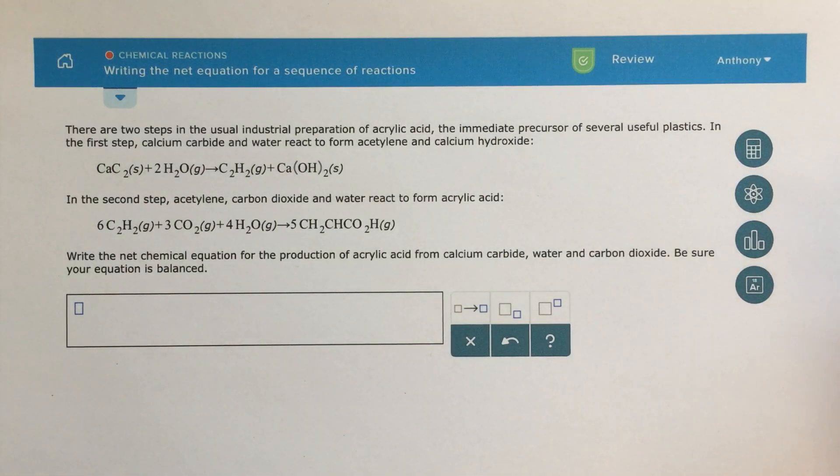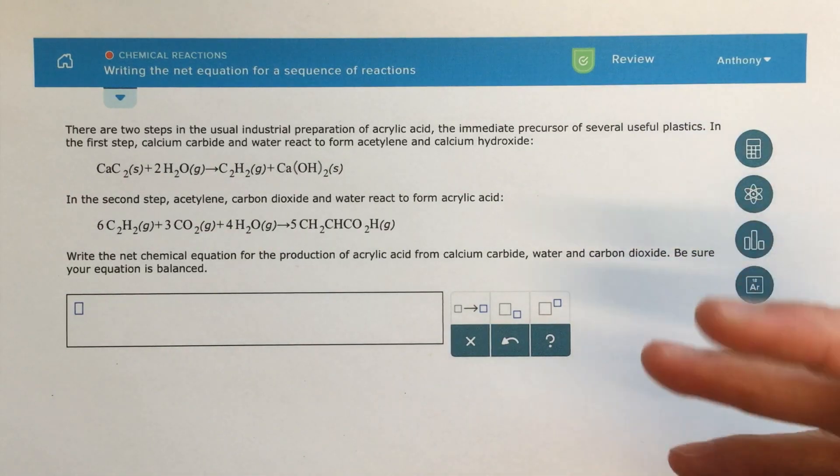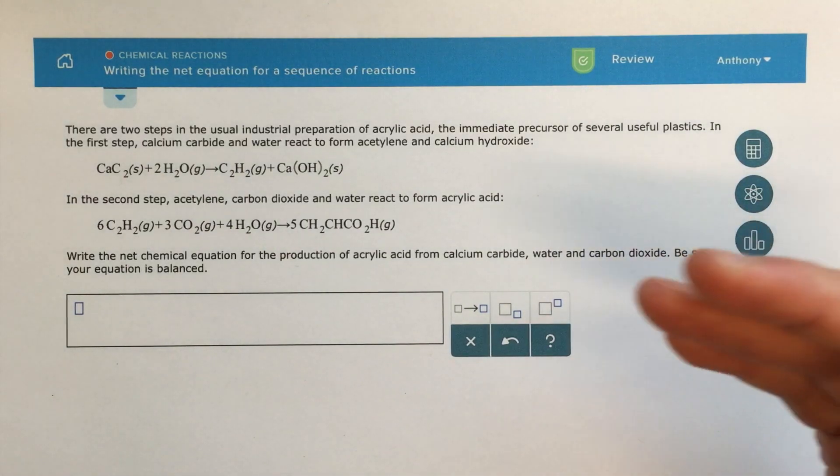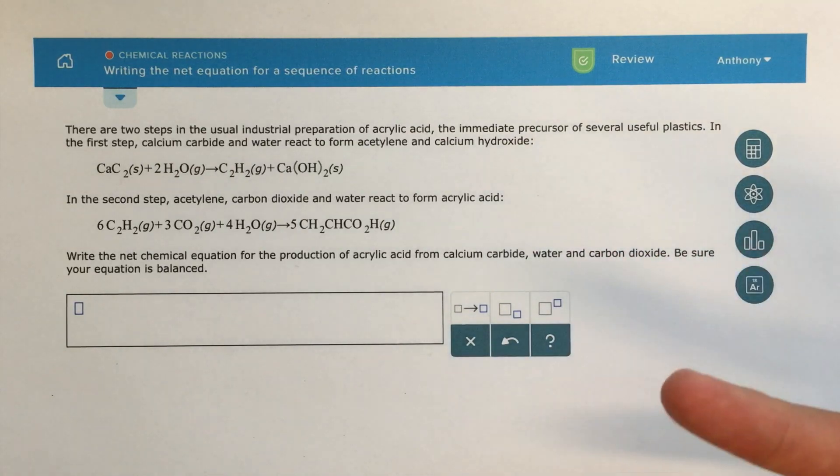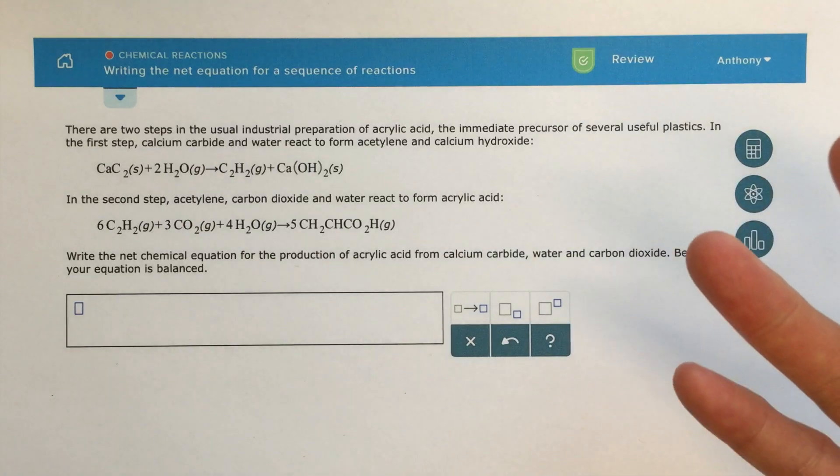Alright class, so this is an ALEKS topic that is called Writing the Net Equation for a Sequence of Reactions, and this is a topic that we're going to be utilizing a lot in terms of adding two different chemical reactions together. It's a pretty common thing to do in chemistry.